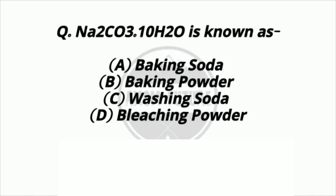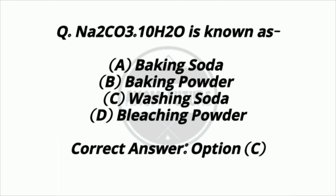Question 5. Na2CO3·10H2O is known as? Option A: Baking soda. Option B: Baking powder. Option C: Washing soda. Option D: Bleaching powder. Answer: Option C — Washing soda.